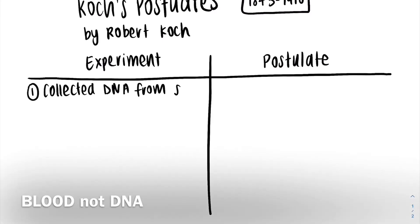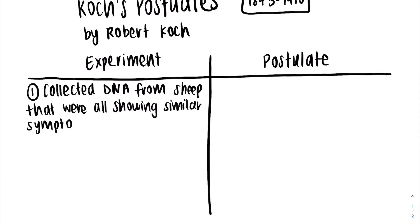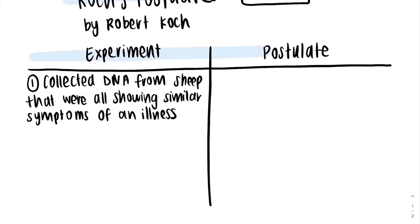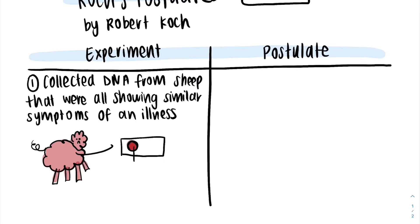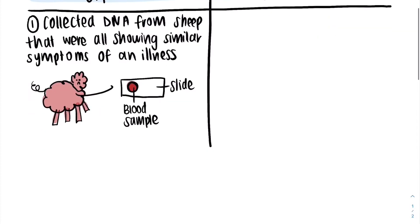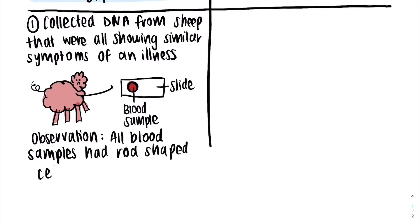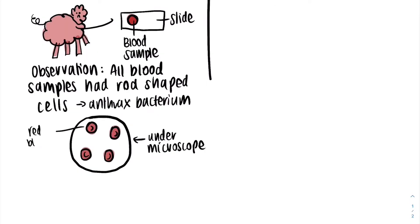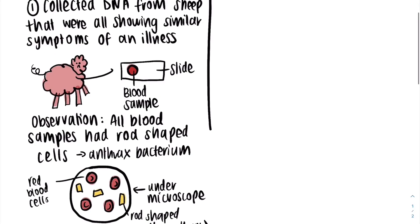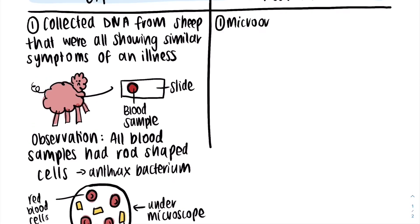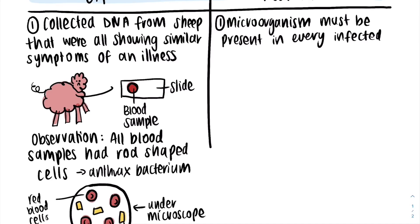Firstly, he collected blood samples from sheep that were all showing similar symptoms of an illness. Upon observing the blood samples under a microscope, he noticed that all blood samples had rod-shaped cells, which we know as anthrax bacteria. This led to the first postulate, which states that the microorganism must be present in every infected organism's blood.